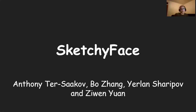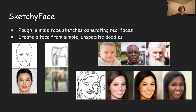Hi everyone, this is our project which we're naming Sketchy Face. Our basic idea is that we want to be able to generate a real looking image of a face from a very rough and simple doodle of a face. So for example, if you were to doodle a person with glasses, maybe with facial hair, maybe with long hair, we would like to be able to recreate that as well as possible.